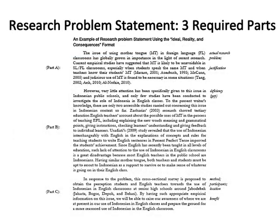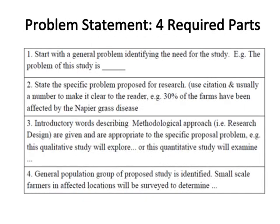Research problem statement has three required parts: in part A, the actual research problem and its justification will be explained in paragraph one; in part B, the deficiency or gap will be elaborately explained based on past studies in paragraph two; in part C, the method, participants, location, and benefits will be explained in paragraph three.